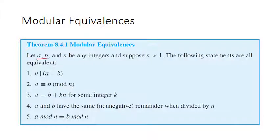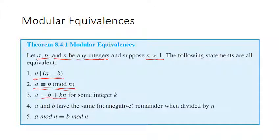So a ≡ b (mod n) means that n divides the difference a minus b. It also means we can write a as b plus k times n for some integer k — in other words, a and b are separated by a distance that is a multiple of n. That's basically exactly what the first statement is also saying: the difference between those two numbers is a multiple of n.